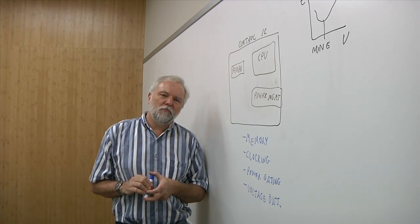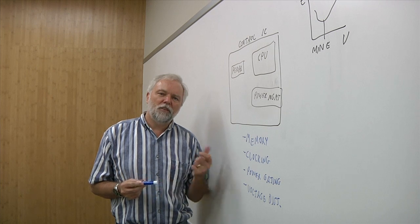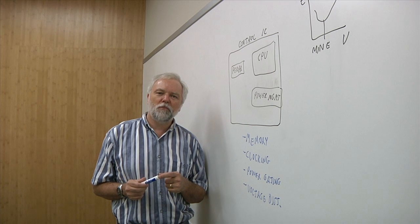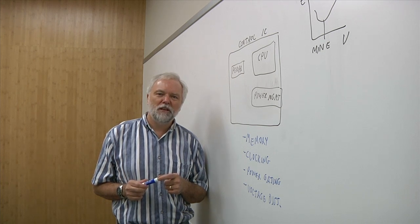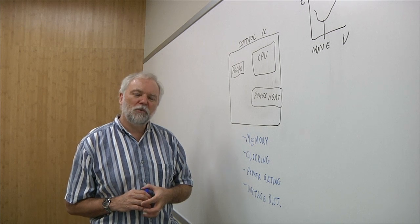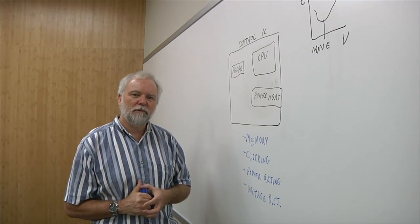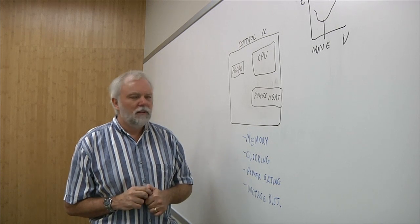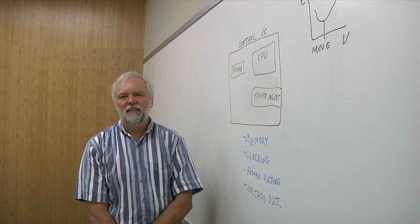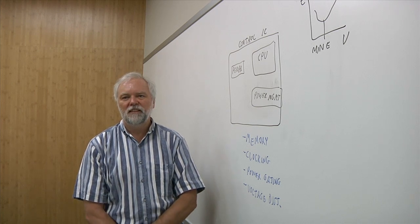The reason that we need to think about that is that a typical memory that comes as part of a foundry process will not operate in the near-threshold regime. So if that is important to us, if it's important to have the memory operate at a low voltage, then we actually need a custom memory. What's the reason for that? Is that because it just takes a certain amount of energy to keep the charge and keep it functioning, or is it something else?